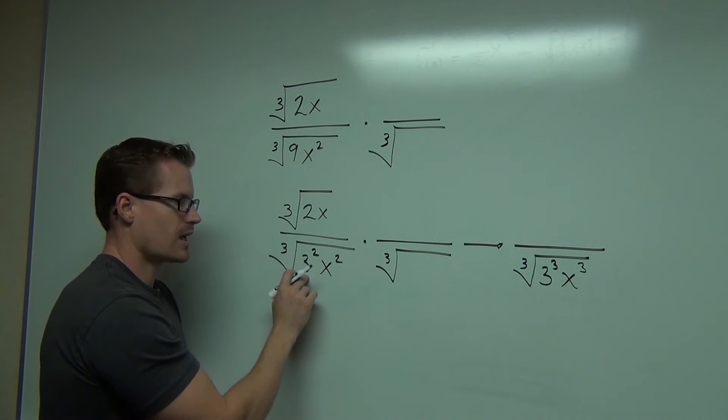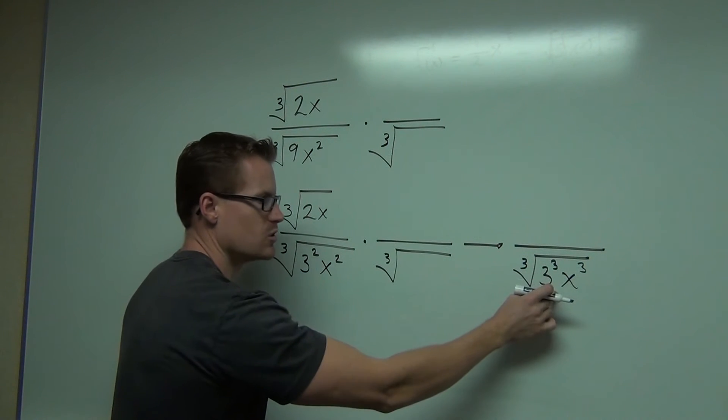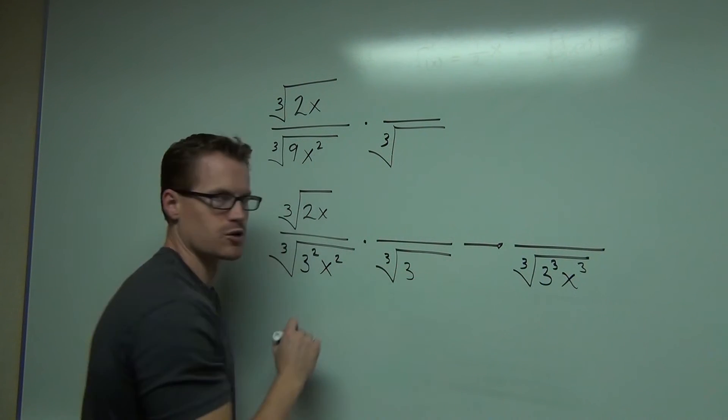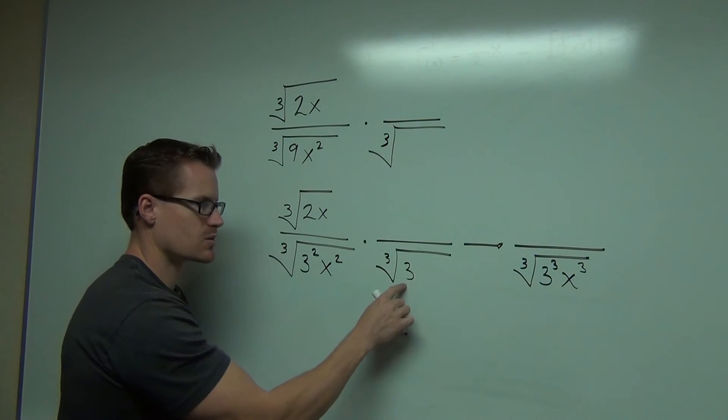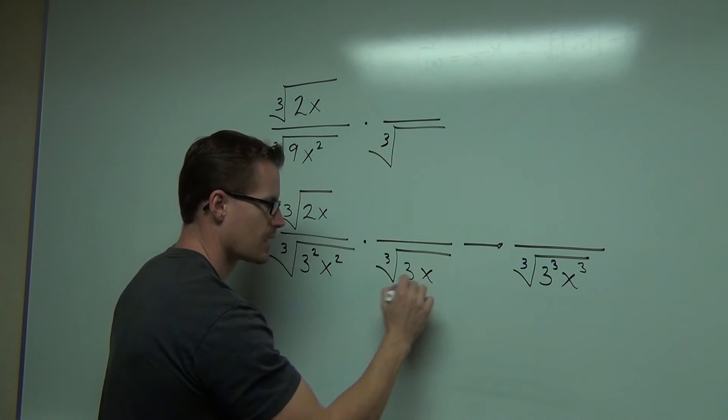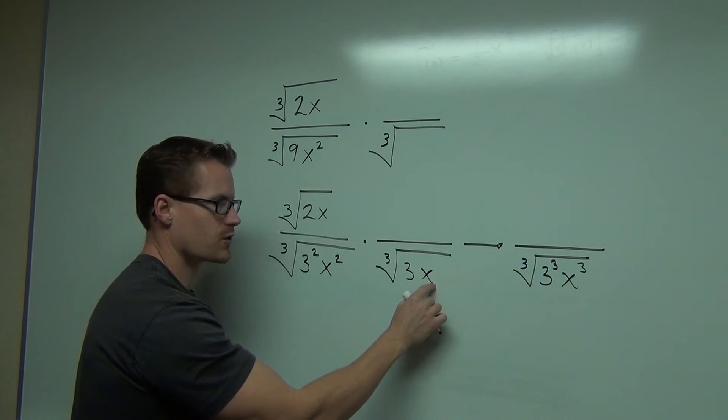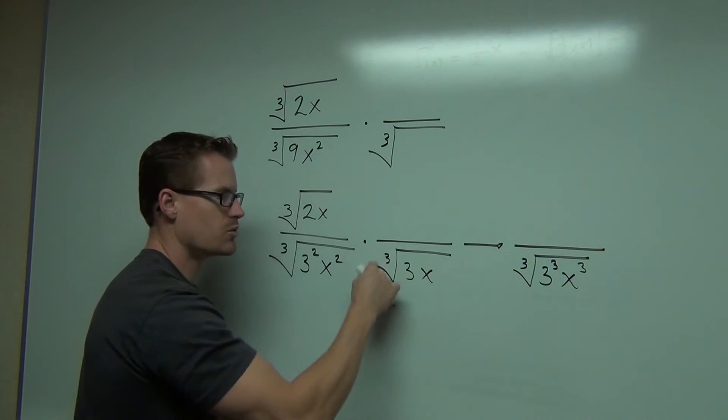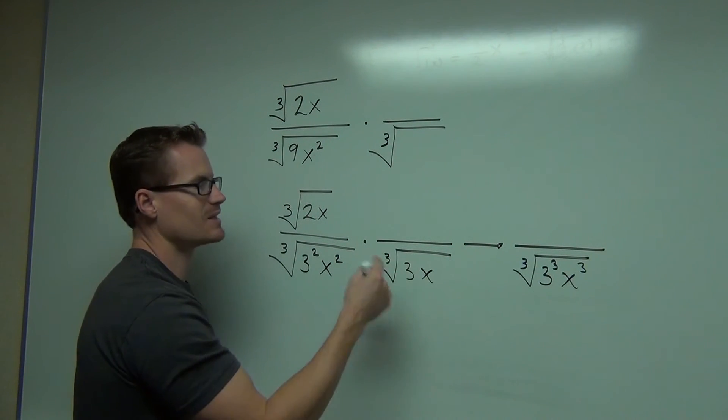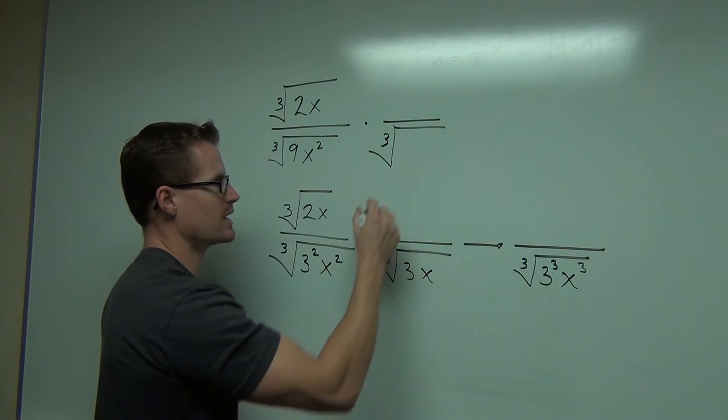So what does it take to multiply 3 squared and get 3 cubed? That's just going to be 3 to the first power. 3 squared times 3 gives you 3 cubed. x squared times x to the first gives you x cubed. So this is the expression we need to multiply. That's a lot better than multiplying by the cube root of 81.